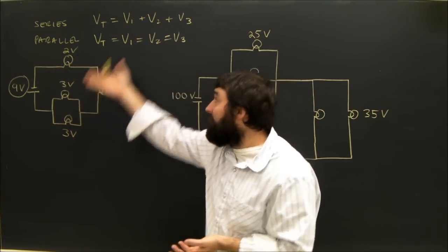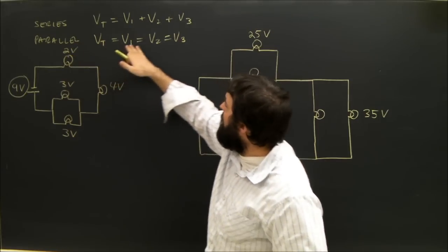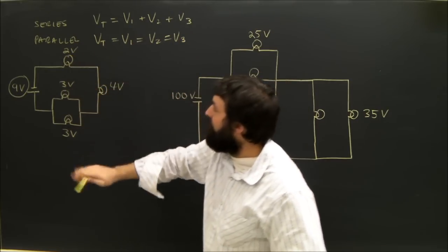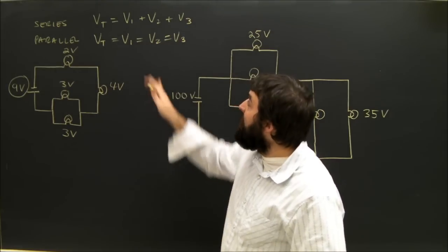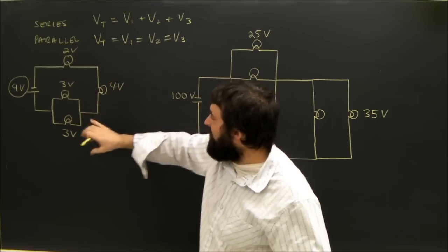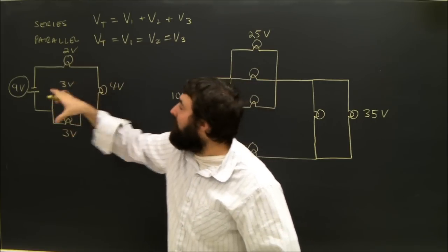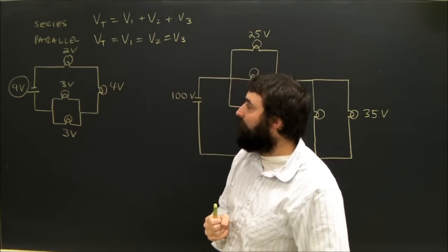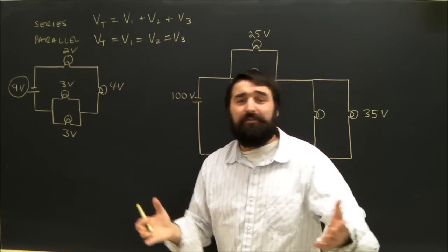And from that, you can see where the formulas come from, I hope. If they're in parallel, they're equal to each other. These are both 3, they're connected in parallel. If they're connected in series, they add up to the total. This guy plus this guy plus this group adds up to 9. 2 plus 4 plus 3 is 9. So this is really easy.